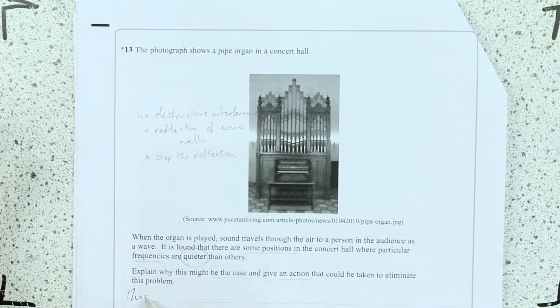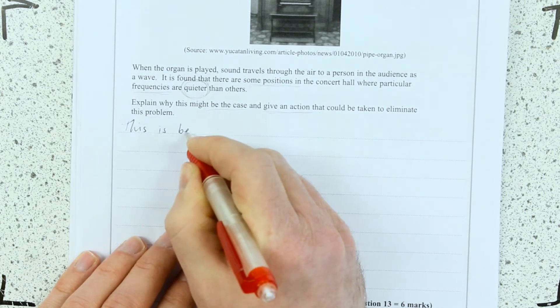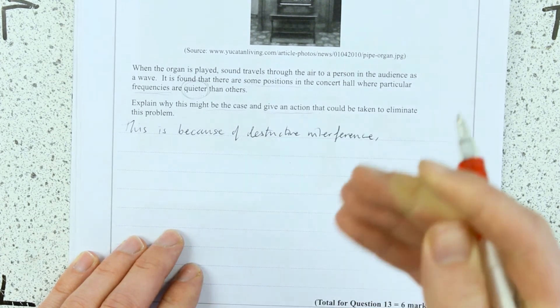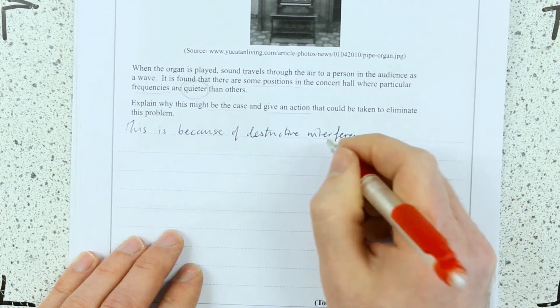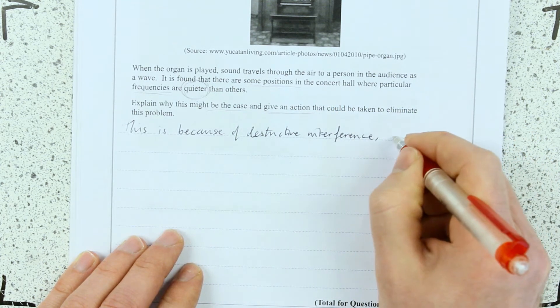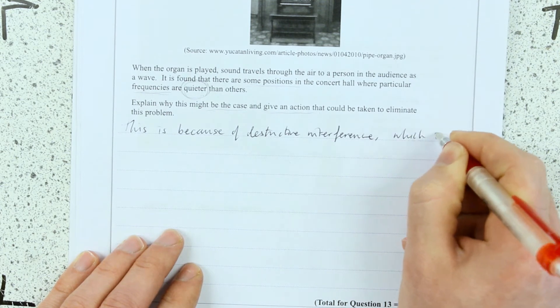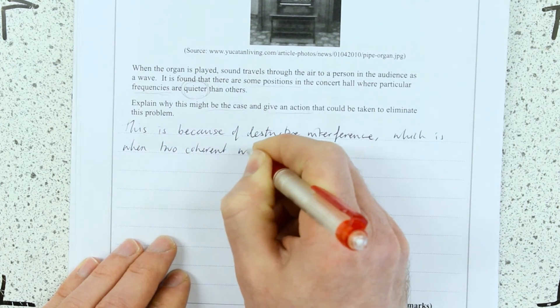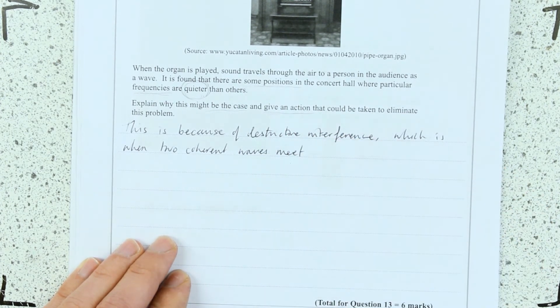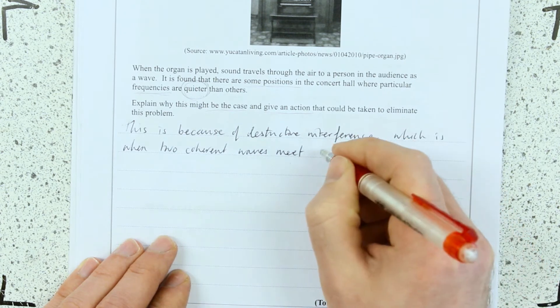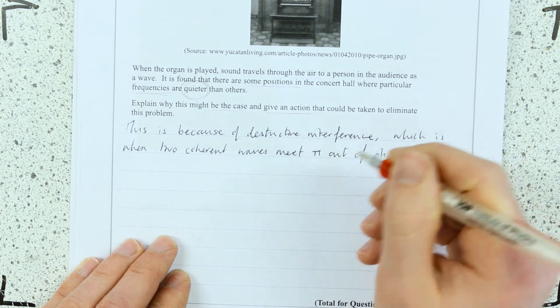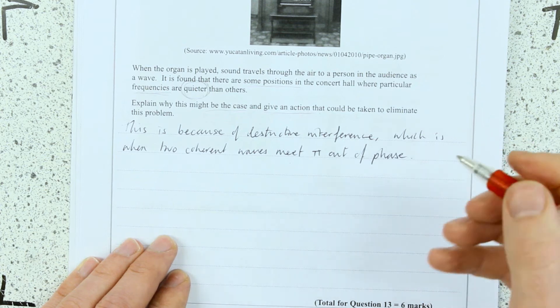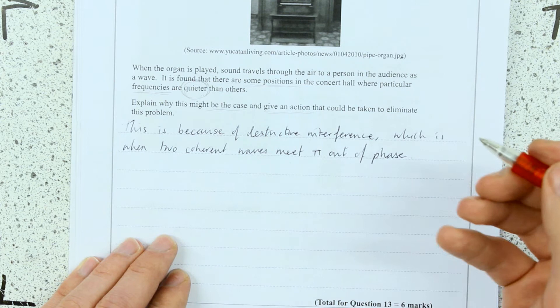This is because of destructive interference. Now I'm going to bring up all my information I can about that. Destructive interference is when two coherent waves meet 180 degrees or pi out of, so peak and peak or peak, sorry, peak and trough or trough and peak. I'm saying, I'm using the language I know, pi out of phase. Right, good.